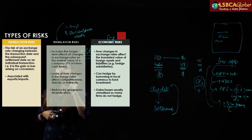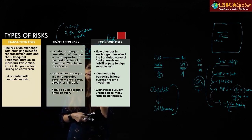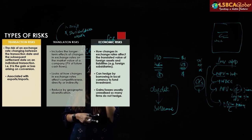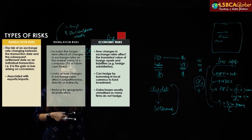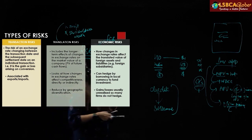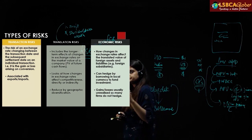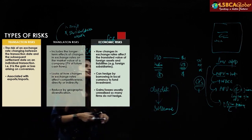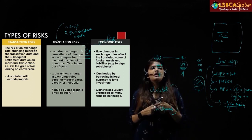Translation risk includes the changes in exchange rates affecting the market value of a company. Assets, liabilities, income, and expenditure in foreign currency need to be converted into the home currency when preparing consolidated financial statements. That risk arises due to presentational purposes — it is not actually a profit or loss — and it can be reduced by geographical diversification.